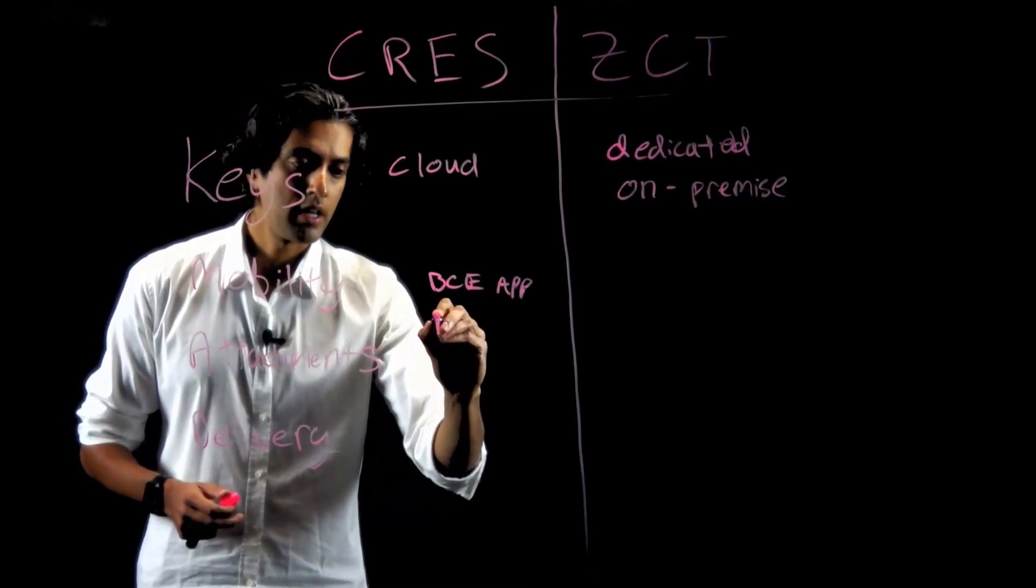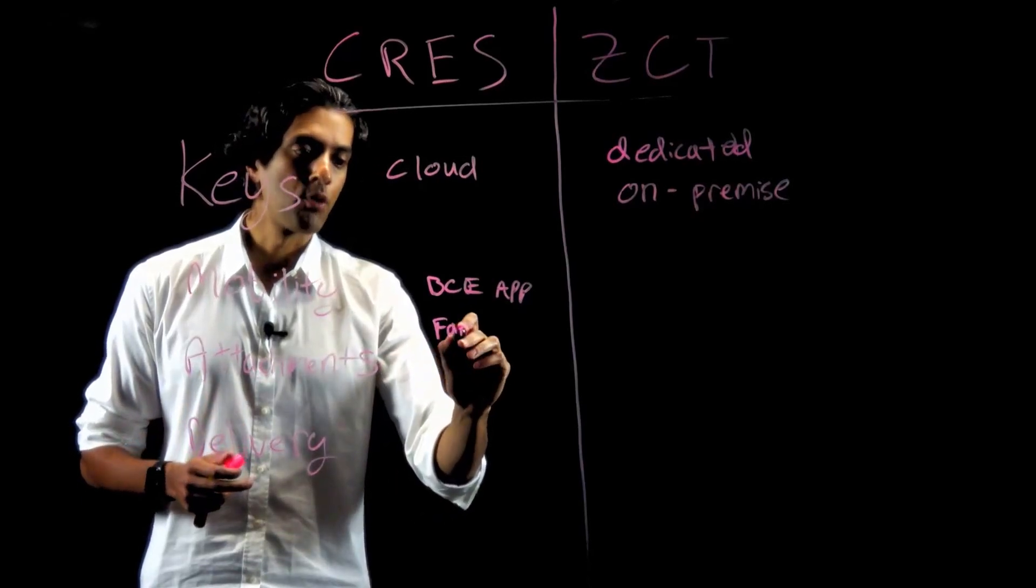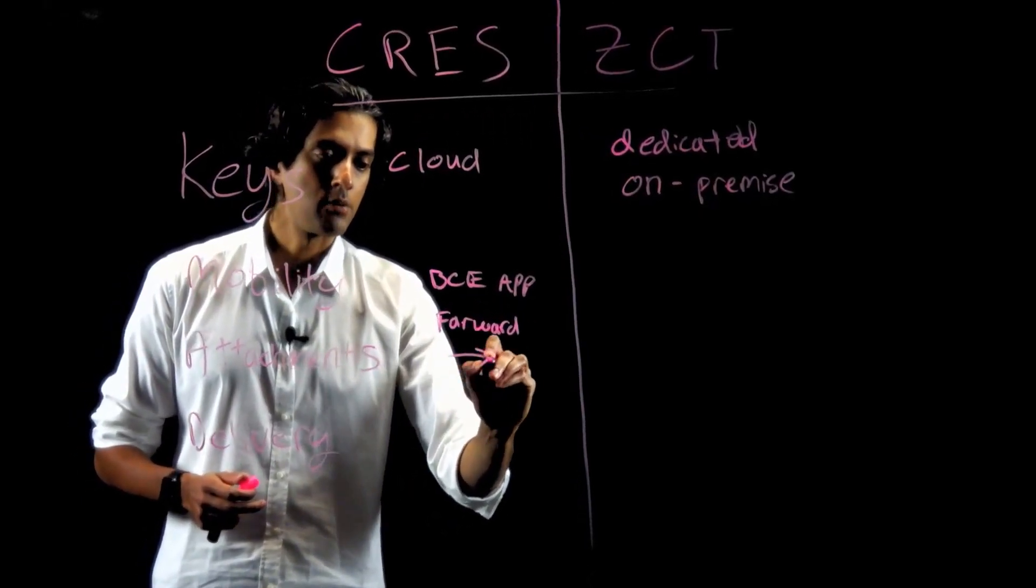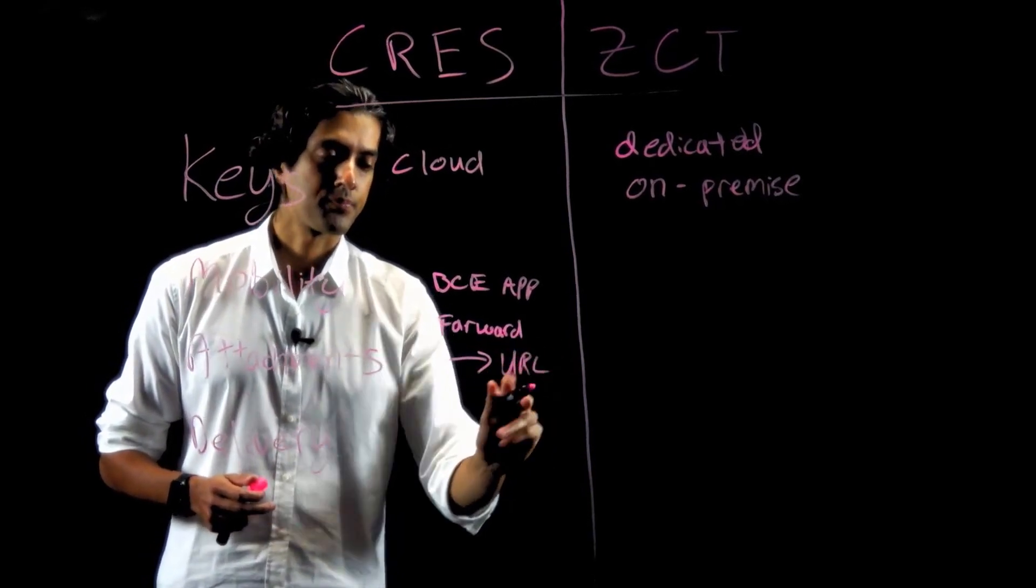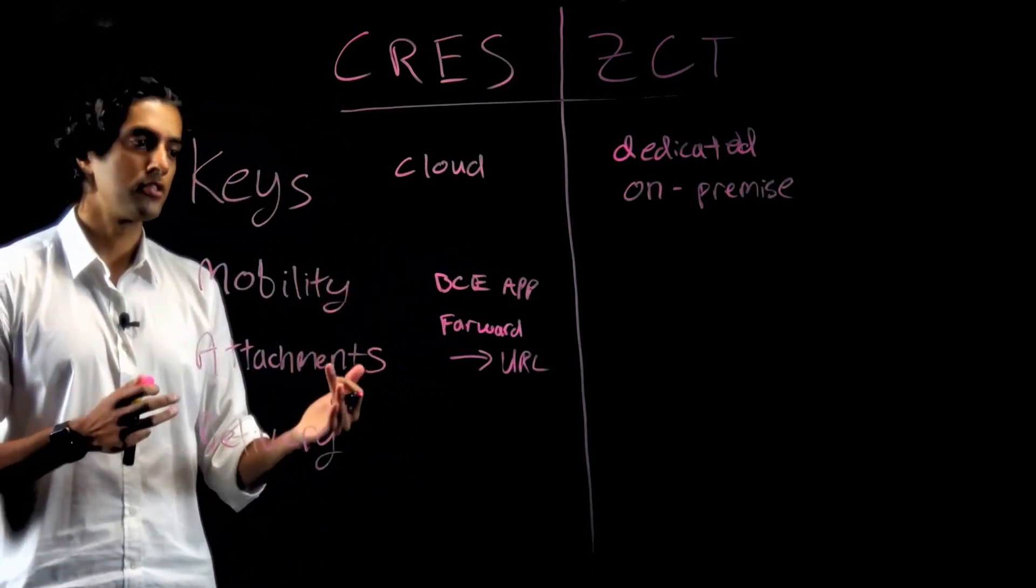There's also a method where a recipient will receive an encrypted message and they will forward that message and receive a URL in return. They'll tap on the URL in their device and then they'll be able to open up that encrypted message.